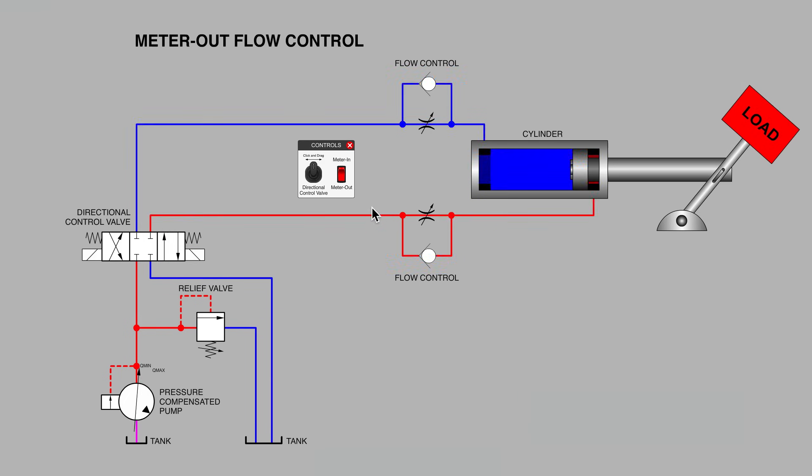...if there isn't enough load for the cylinder to push on, and in this case we've even got a negative load, the load is running away with the rod, what can happen is an intensification of pressure between the rod and cylinder port and this particular needle valve. This particular line here can become pressured to many multiples of what the pressure is on the back side of the cylinder.